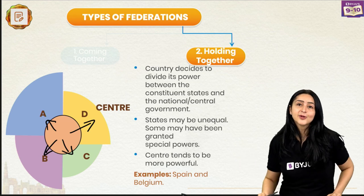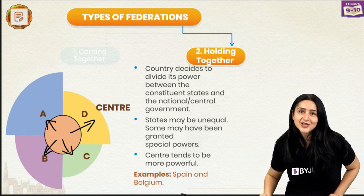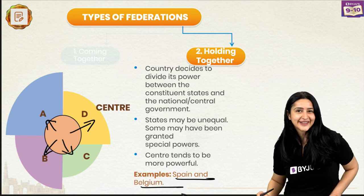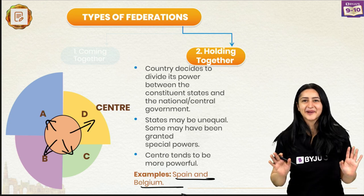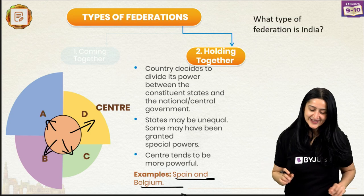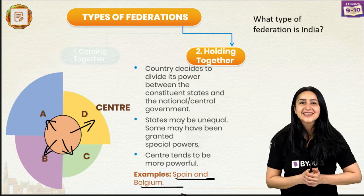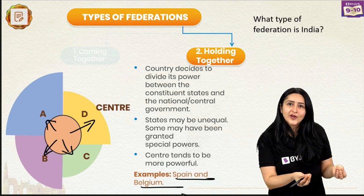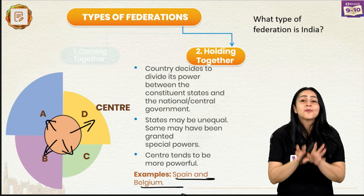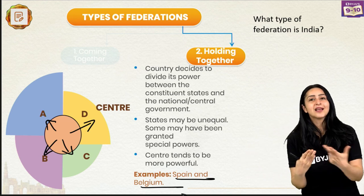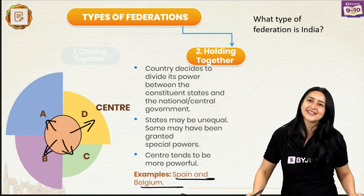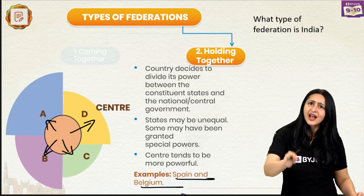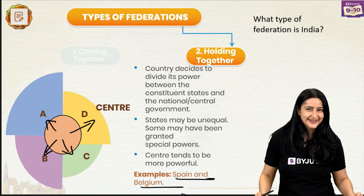Some examples of holding together federation would be Spain and Belgium. And that brings me to a question — what type of federation is India? Apply what I've just taught you. Think about it and let me know your answers in the comment section below. Put the answer in now because I'm going to be revealing this in a little bit.